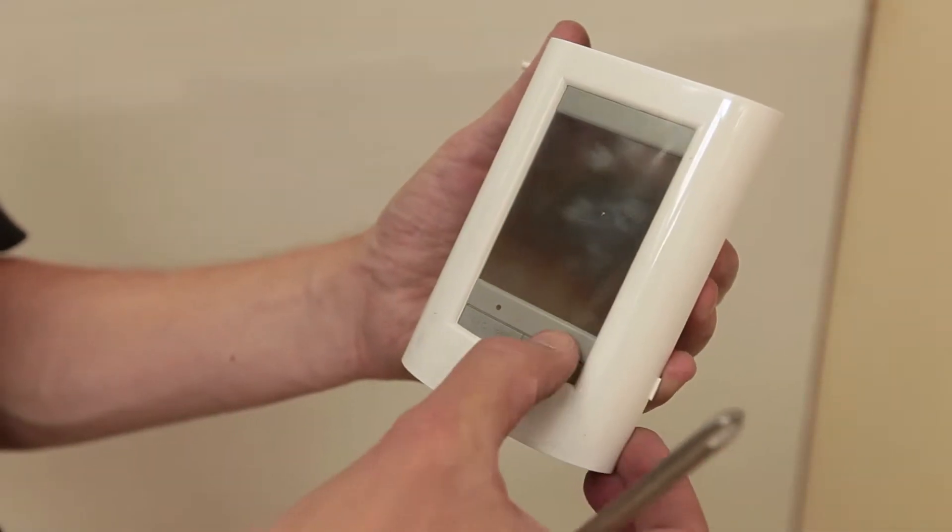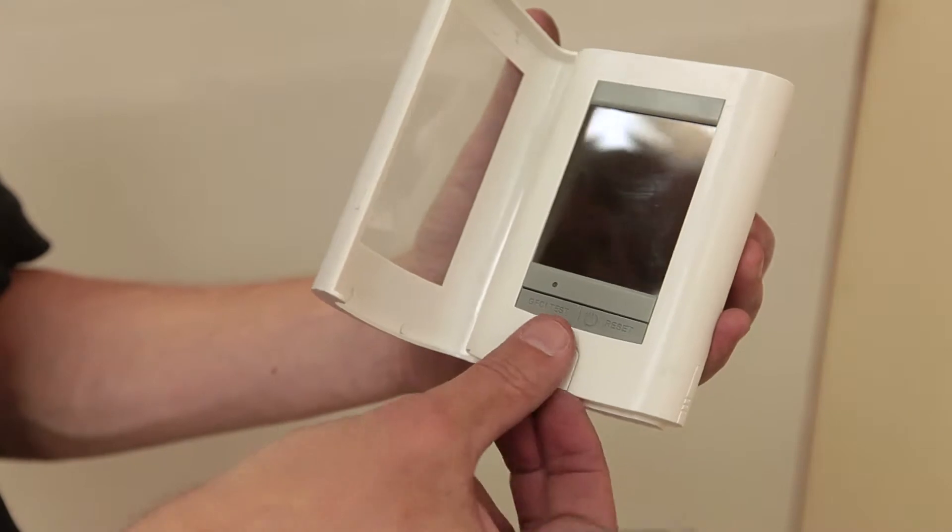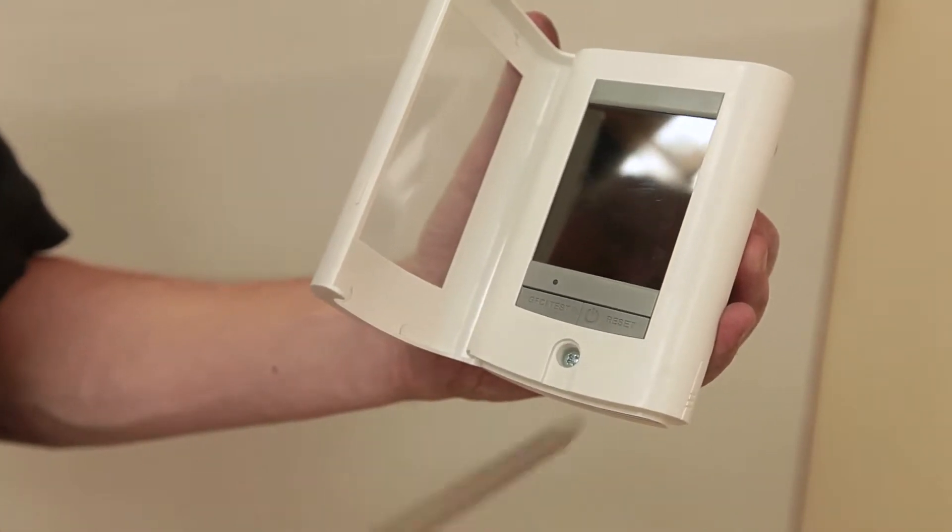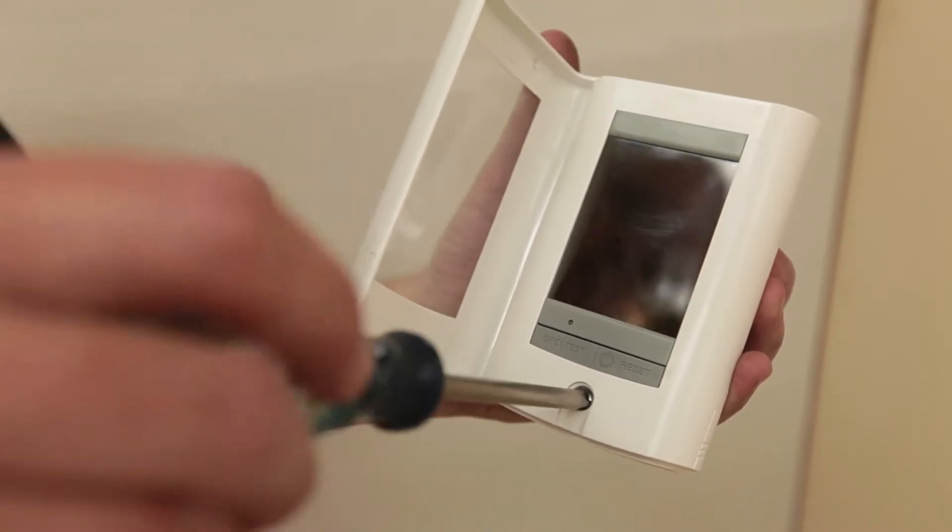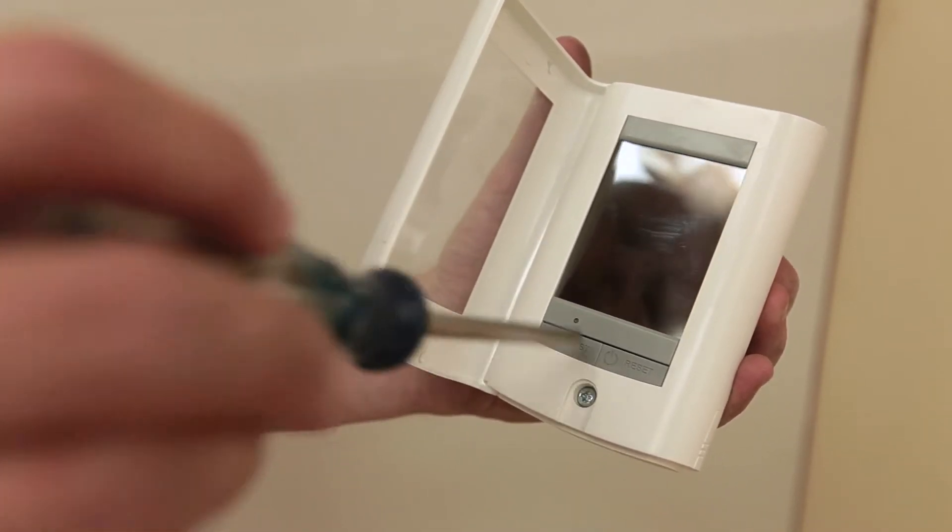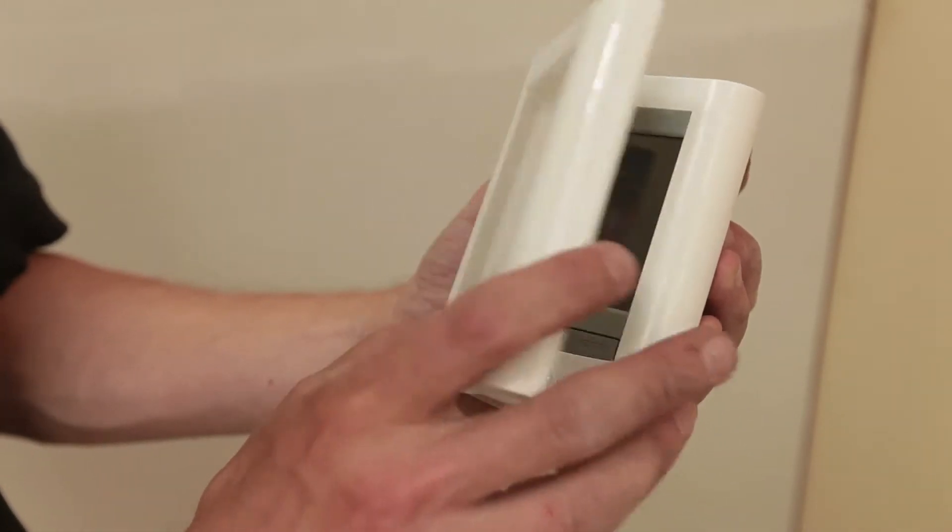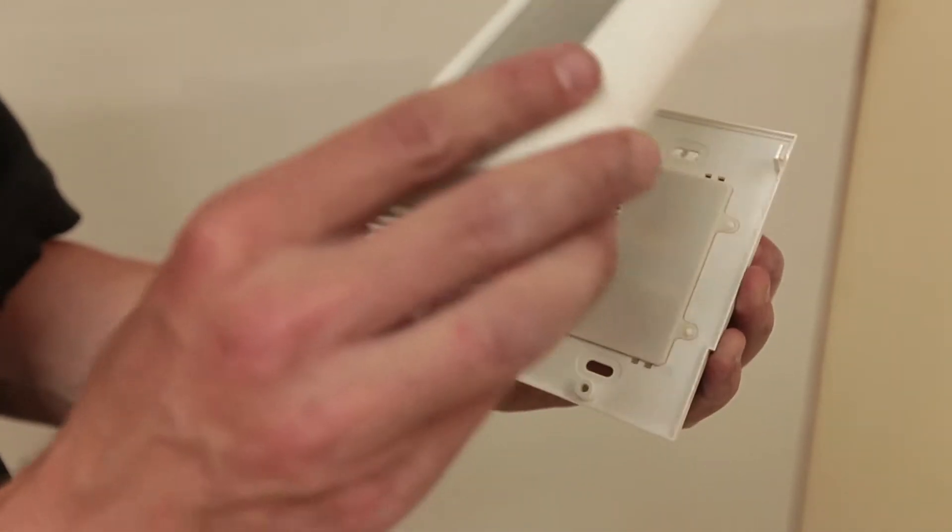The SunStat view has a screw cover near the bottom center. Pull the cover off to access the screw securing the front to the base. Some SunStat models have a flip down screw cover instead. Remove the front from the base after the screw is loosened and put it in a safe place until after all wiring is complete.